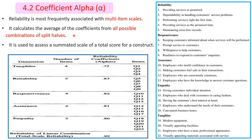The difference between coefficient alpha and split-half reliability is that coefficient alpha calculates the average of coefficients from all possible combinations of split halves, whereas split-half takes the correlation of only one possible combination — either odd and even or a simple two-part division.